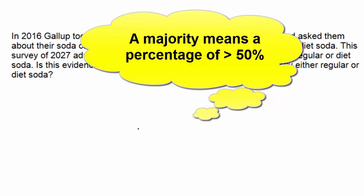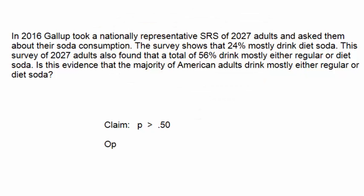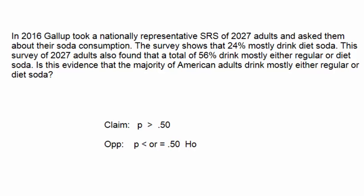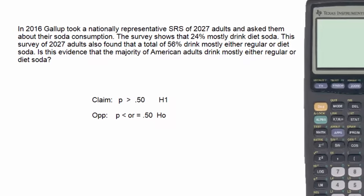To make a decision, we test the claim that the proportion is greater than 50%. Step one is to write the claim: p is greater than 0.50. Step two is to write the opposite: p is less than or equal to 0.50. Step three identifies the null hypothesis, which is the opposite of the claim because it contains the equal sign. Step four labels the alternative hypothesis, which in this case is the claim.